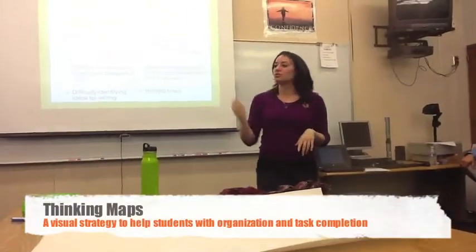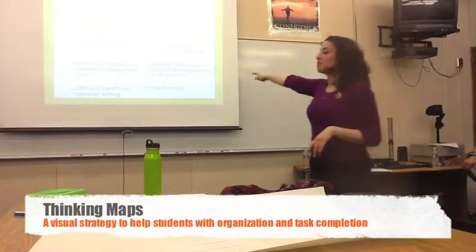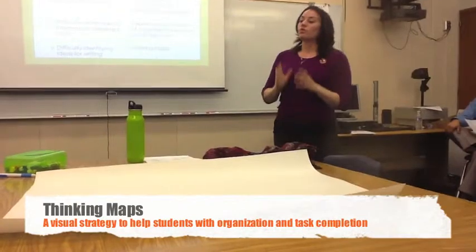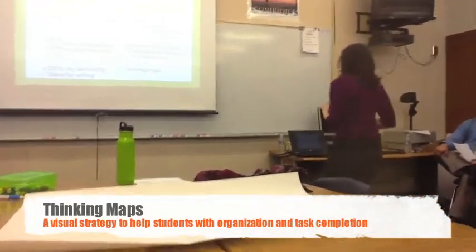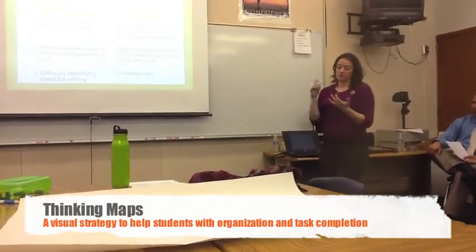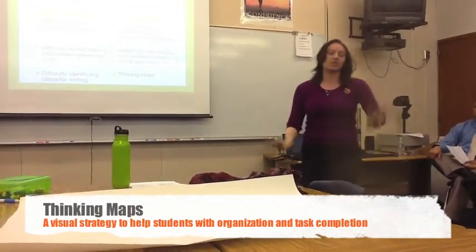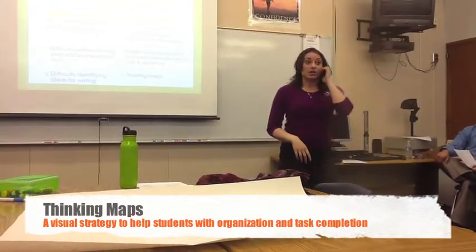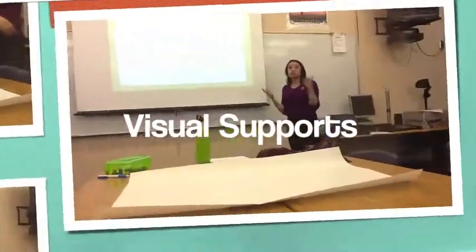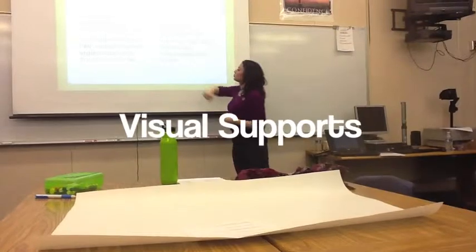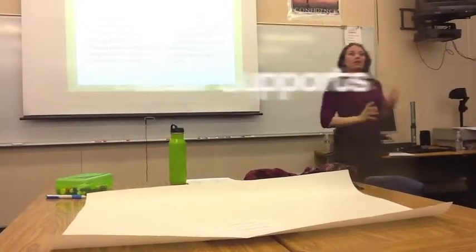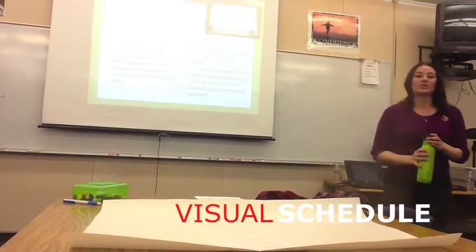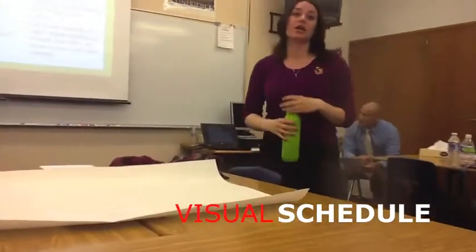The best accommodation for students with autism are thinking maps. Their strength is in visual processing. If you can use thinking maps — especially for brainstorming ideas, for writing, for sequencing anything, like sequencing steps in a math problem or the steps to writing an essay — you need to do that. Visual support provides organization and clarity. Visual schedules can be as simple as writing down assignments on a whiteboard and having students check them off.